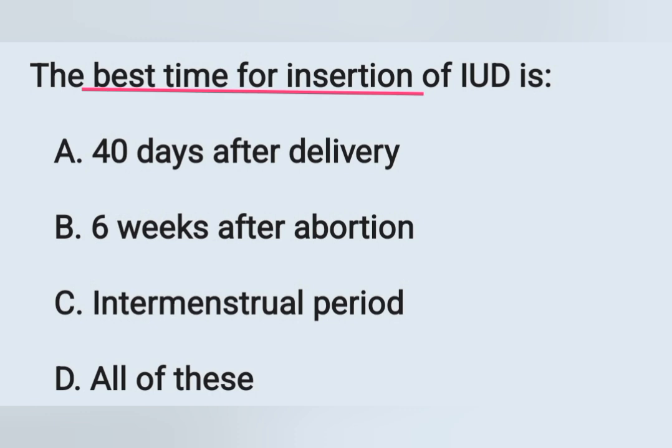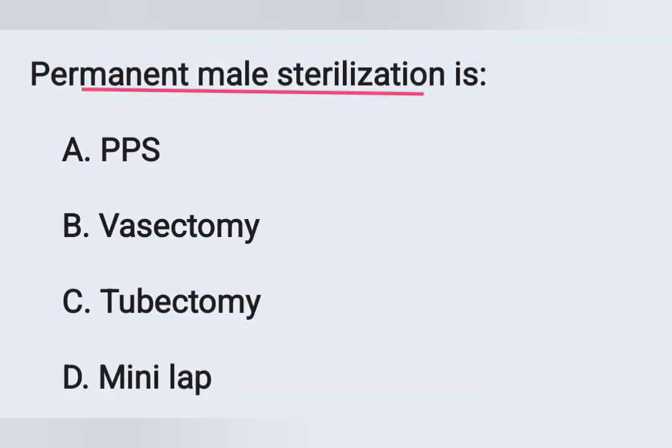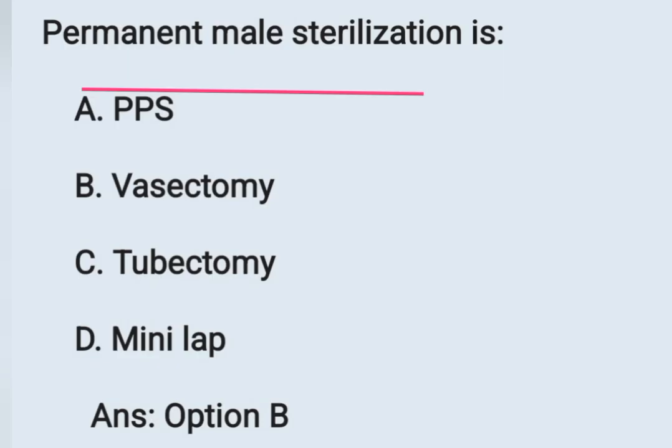Next question: The best time for insertion of an intrauterine device (IUD) is — Option A: 40 days after delivery, Option B: six weeks after abortion, Option C: intermenstrual period, Option D: all of the above. All options are correct — 40 days after delivery, six weeks after abortion, or the intermenstrual period. So the correct answer is Option D: all of the above. The next question: Permanent male sterilization is — Option A: PPS, Option B: vasectomy, Option C: tubectomy, Option D: mini-lap. Male sterilization is vasectomy and female sterilization is tubectomy. Correct answer is Option B: vasectomy.